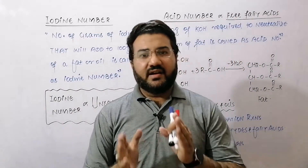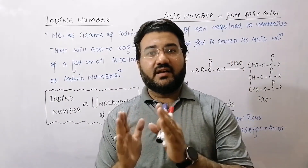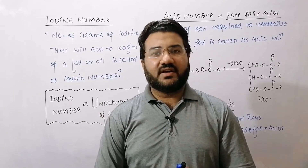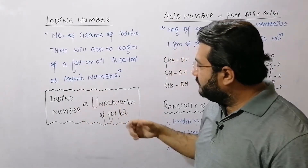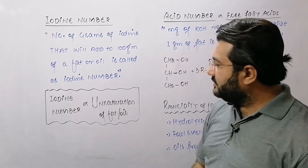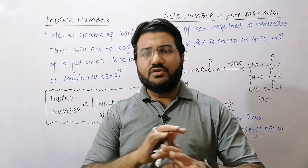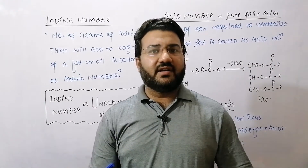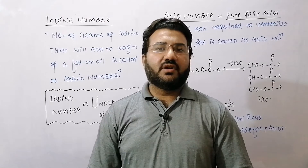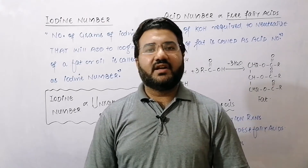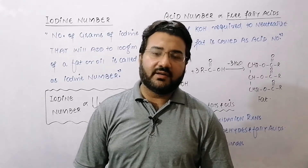A greater amount of iodine added indicates a greater number of double bonds in the fat or oil. This means that the iodine number is directly proportional to the degree of unsaturation of the fat or oil. And if a fat or oil has no double bonds, then its iodine number will be zero, because not even a single gram of iodine can be added into a 100% saturated fat or oil.